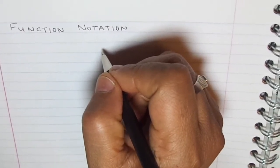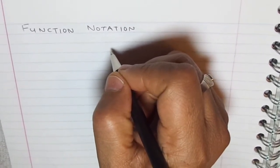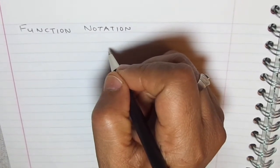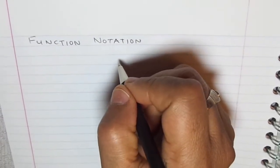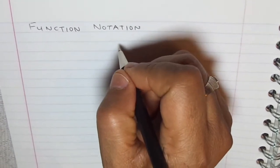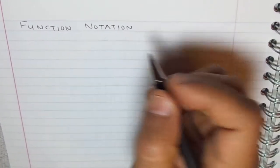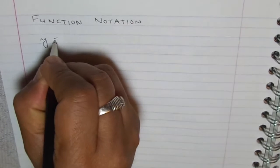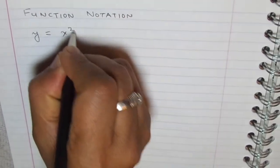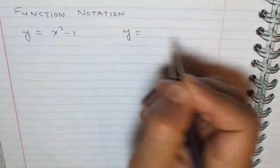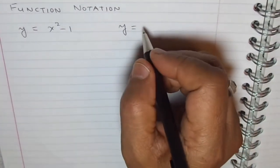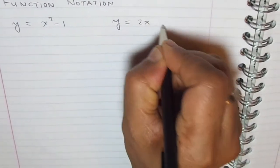As you are very clear about equations, let's start with equations and then go to function notation. Let me take examples of algebraic equations like y equals x squared minus 1. And you have also seen many equations everywhere you write y equals something. Let me write y equals 2x plus 1.